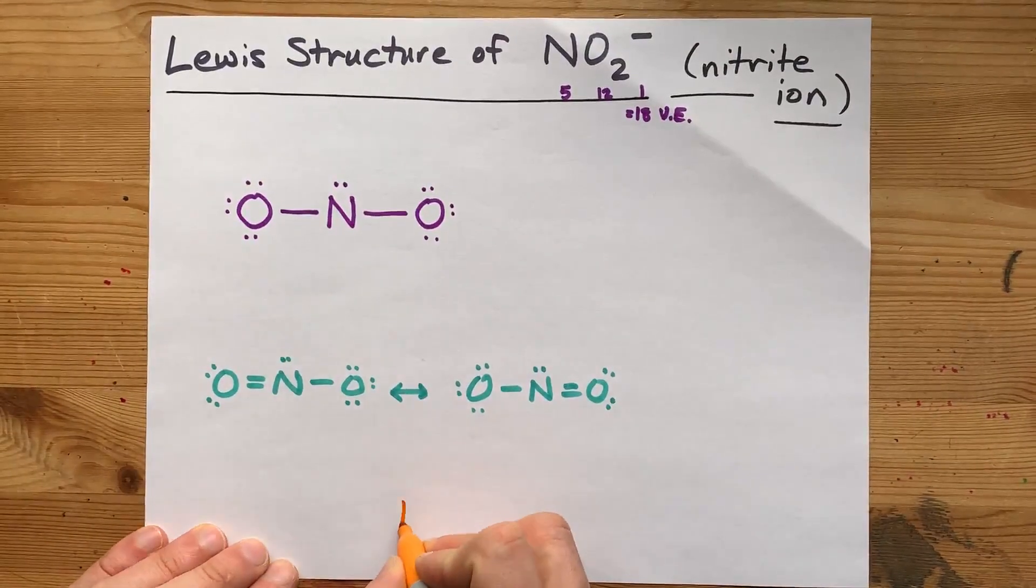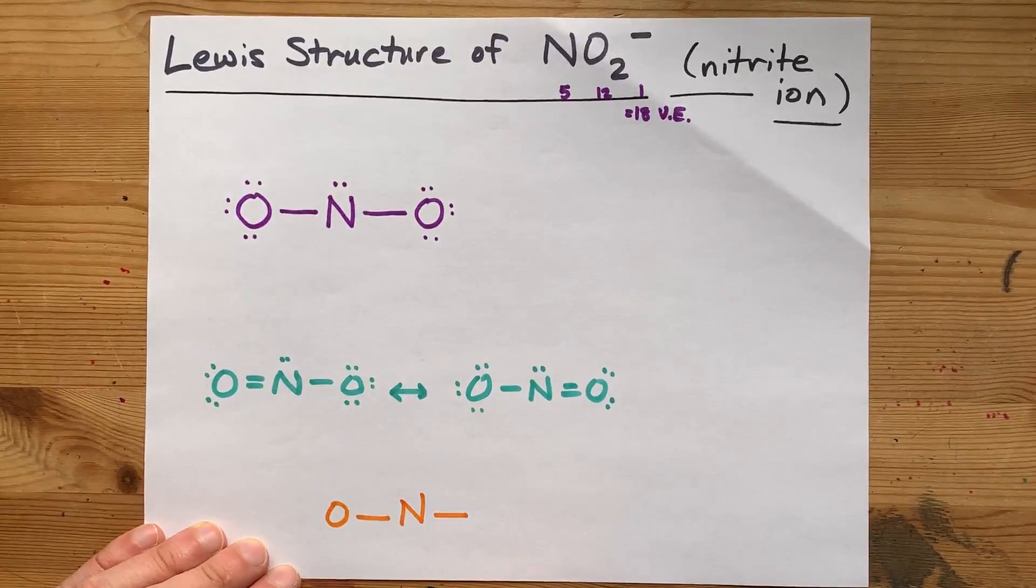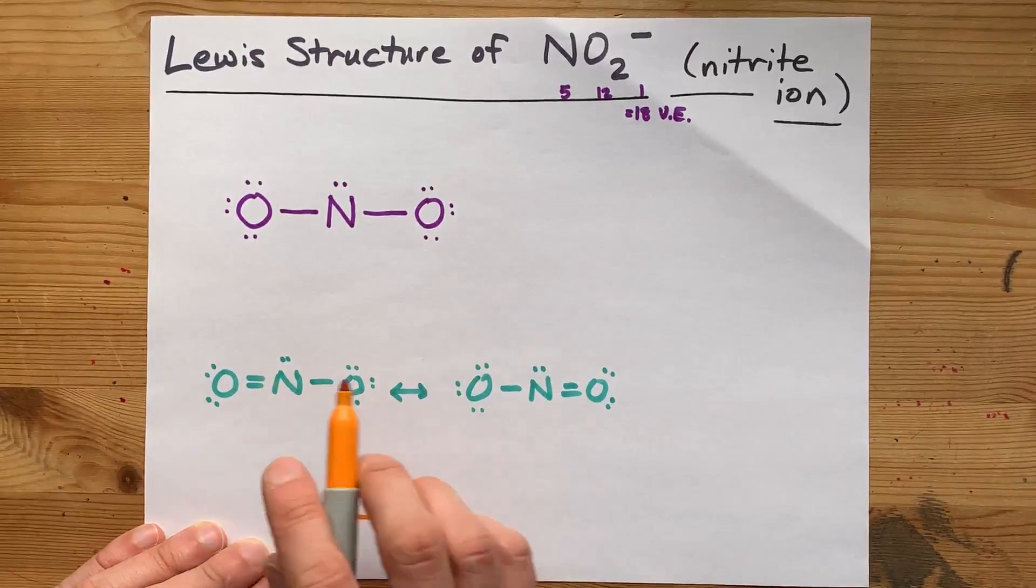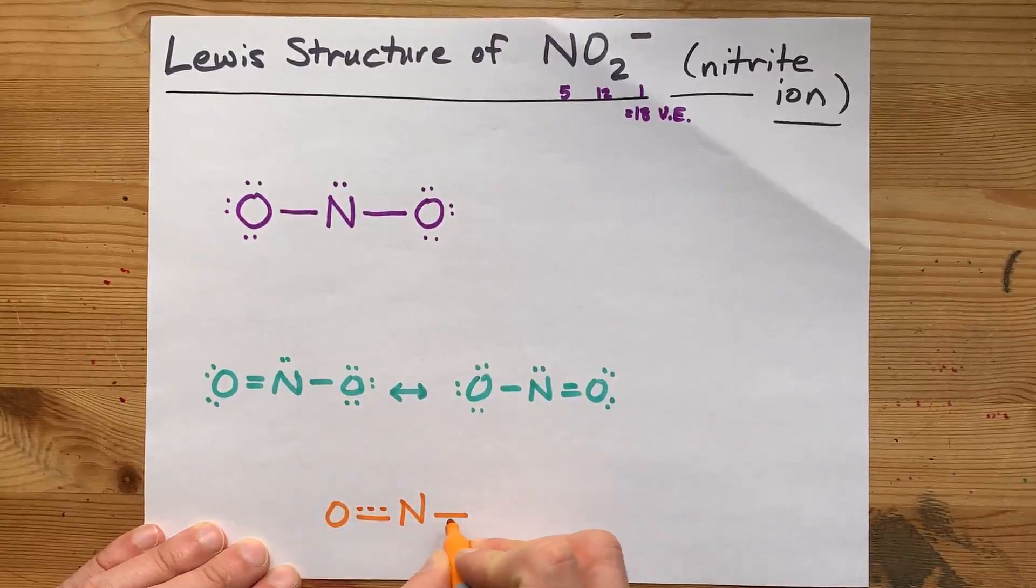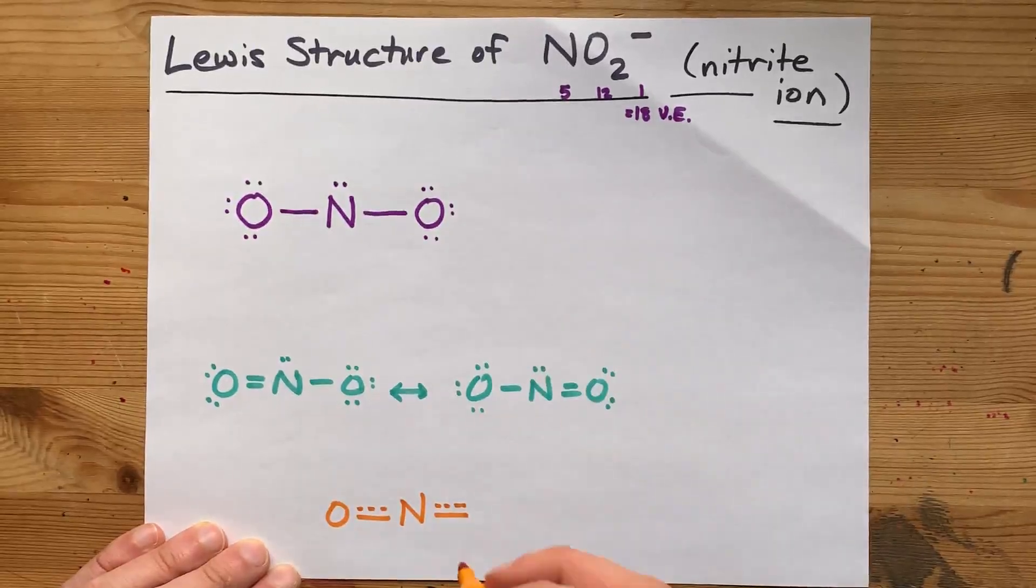And there's no easy way to draw it beyond showing that the nitrogen is connected to both oxygens, and then showing that these bonds aren't quite double and they're not quite single either. So we do a dashed line to show that it's, I don't know, one and a half, one point something-ish.